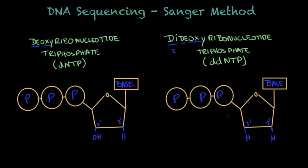This is the main difference between the dNTPs and ddNTPs, and for that reason the DNA polymerase will recognize this. As soon as it sees that one of these has been introduced in the sequence, replication will stop. This is the key thing about the Sanger method.